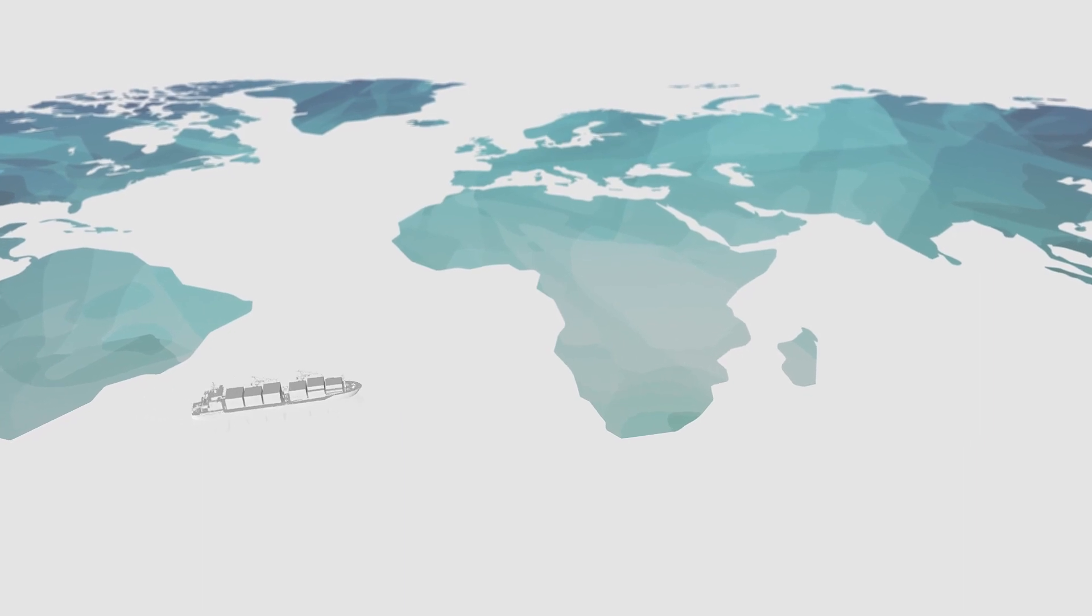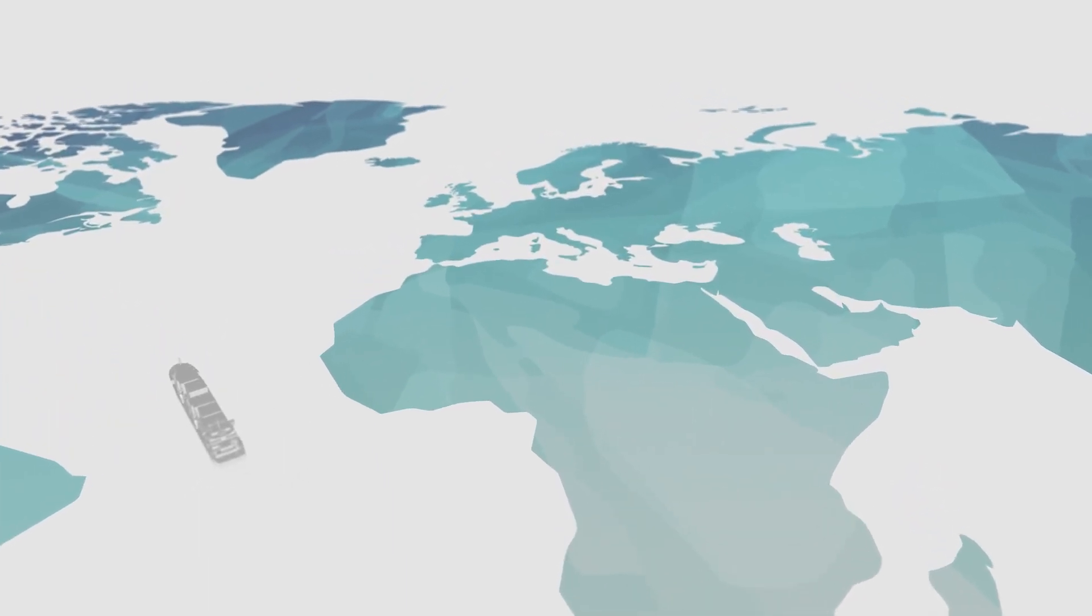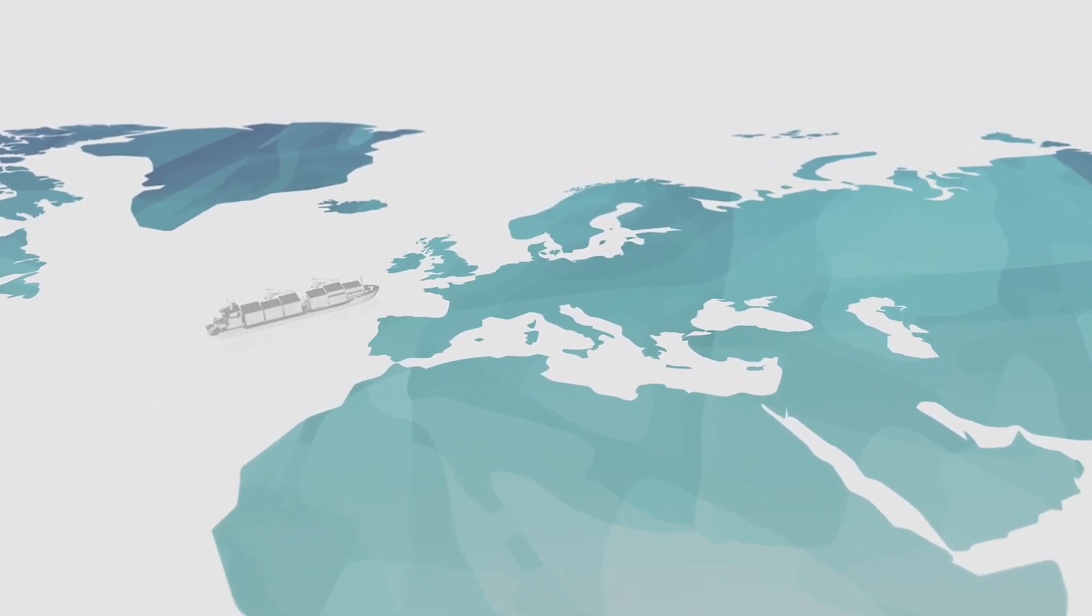For instance, if a container ship travels from one country to another, the eSIM consumer IoT solution makes it easy to switch to a local connectivity provider when the container crosses a border.